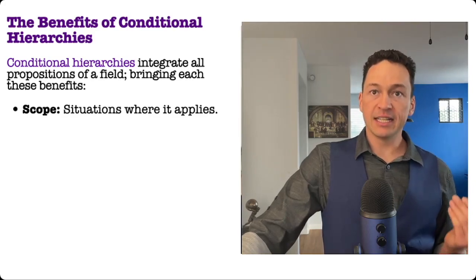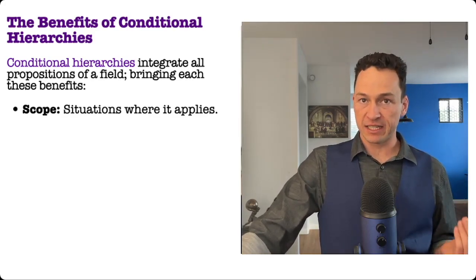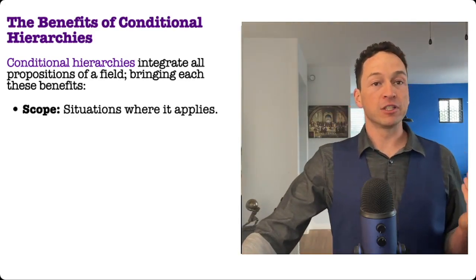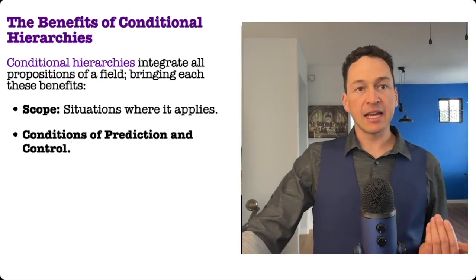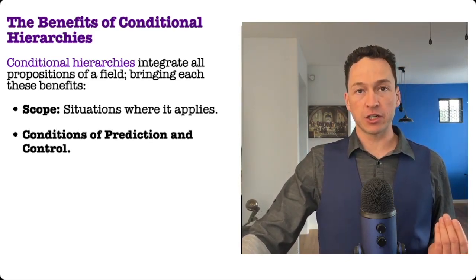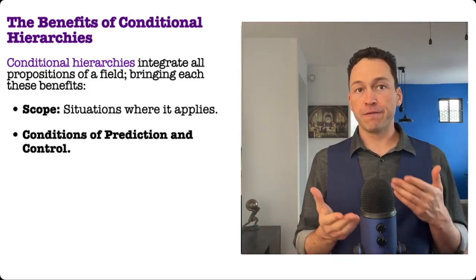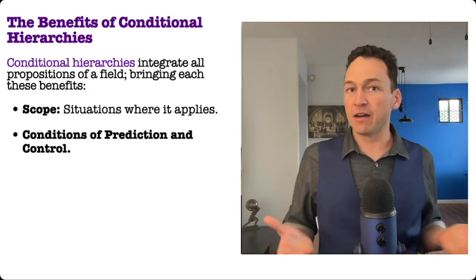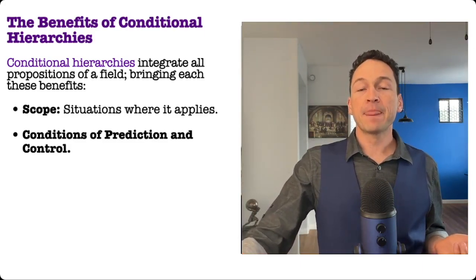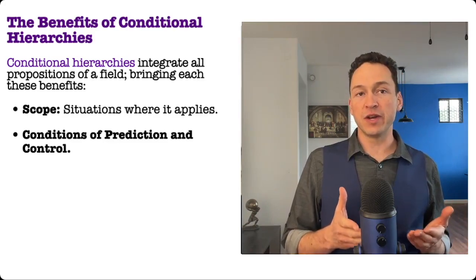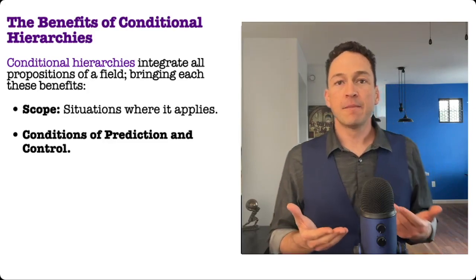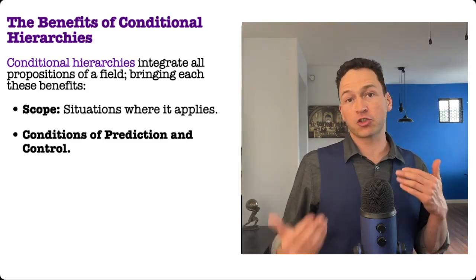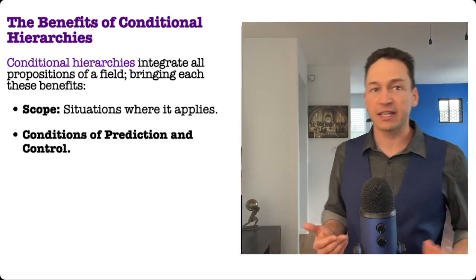So in general, conditional hierarchies identify the known scope of existing generalizations. By scope I mean the set of situations where that principle applies. The next benefit I explained earlier was levers of prediction and control. Newton's Principia shows us that force causes acceleration and acceleration causes a change in motion, and that an object's change in motion obviously determines where the object will end up at a later time. And what this knowledge allows us to do is to control the motion of countless objects.